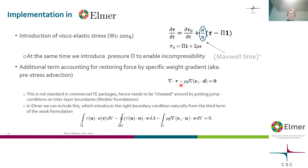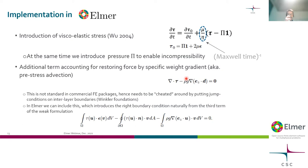On top of the linear elasticity problem, we also need to account for jumps in density and gravity across earth regions. We need an additional term for the restoring force by the specific weight gradient — called gravitational pre-stress advection. This is usually missing in standard finite element packages and has to be added via Winkler foundations, but in Elmer we can include it directly in the weak formulation, so layer boundary conditions are automatically accounted for.